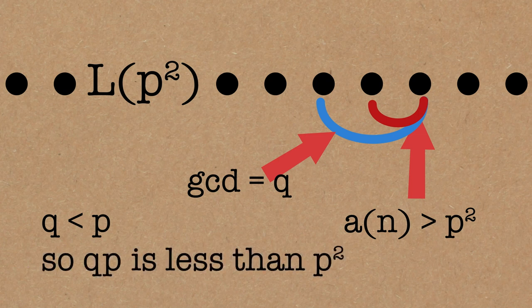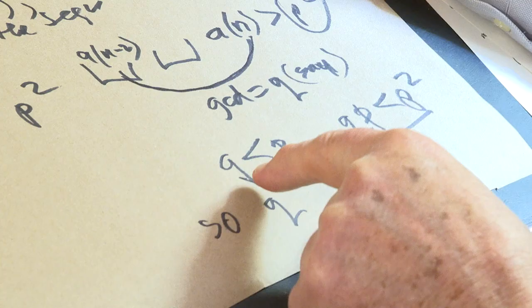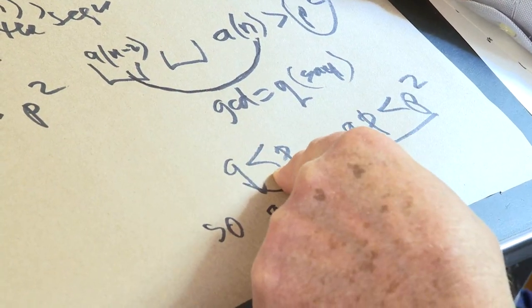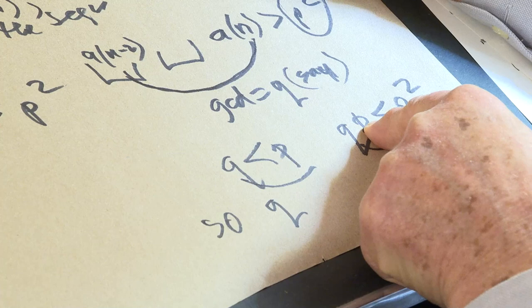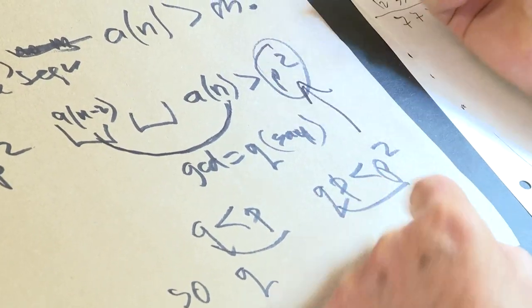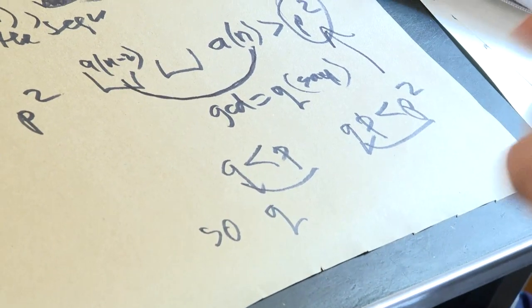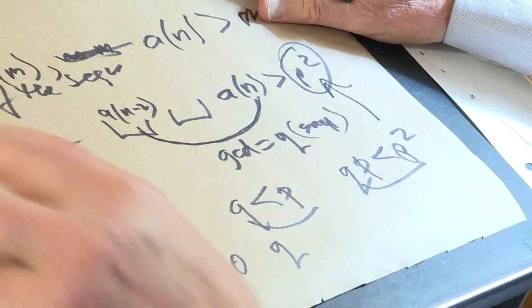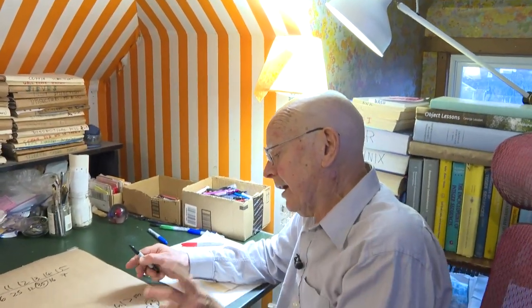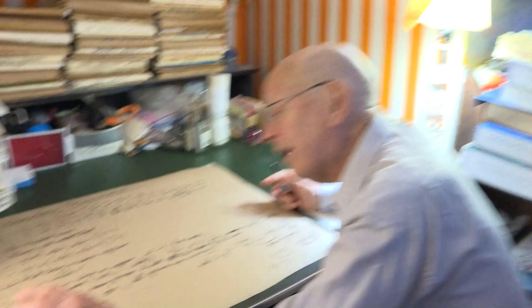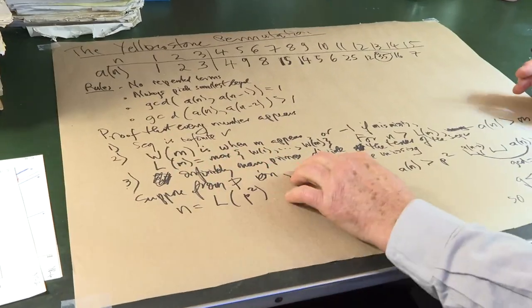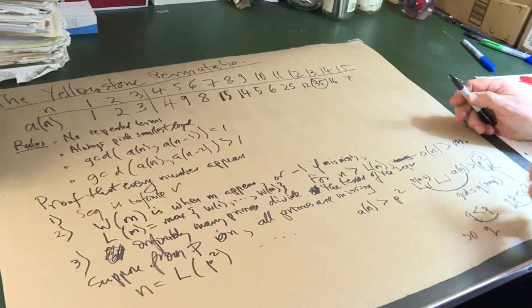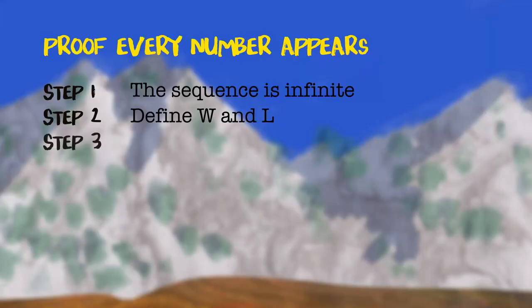So that means that qp is less than p squared. Q is less than p? Q times p is less than p squared. But then, because this q is less than p, we could have used q times p here, instead of p squared. And this is a contradiction to the fact that we always take the smallest candidate. So, by assuming that there was some limit to the primes that appear, we get a contradiction. Therefore, there are infinitely many primes.